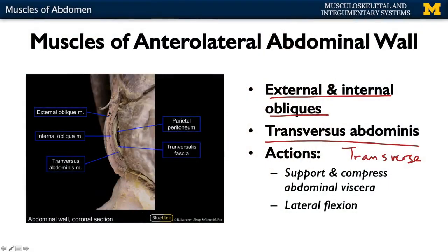Looking at this image, you can see the superficial external oblique, internal oblique, and transversus abdominis, and then you're getting into the parietal peritoneum, which plays a big role in allowing movement of the GI system.